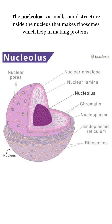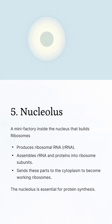Nucleolus. The nucleolus is a small, round structure found inside the nucleus of a cell. It is like a mini-factory that makes the parts of ribosomes that help build proteins. It produces ribosomal RNA, assembles rRNA and proteins to make ribosome subunits, and then these parts are sent out of the nucleus into the cytoplasm where they become working ribosomes.